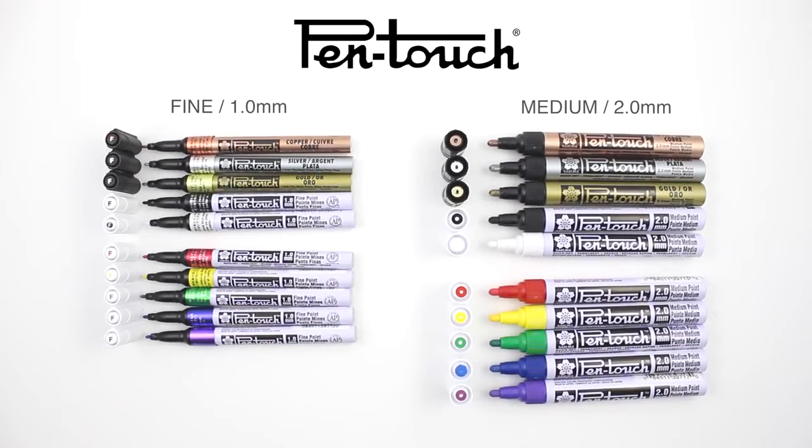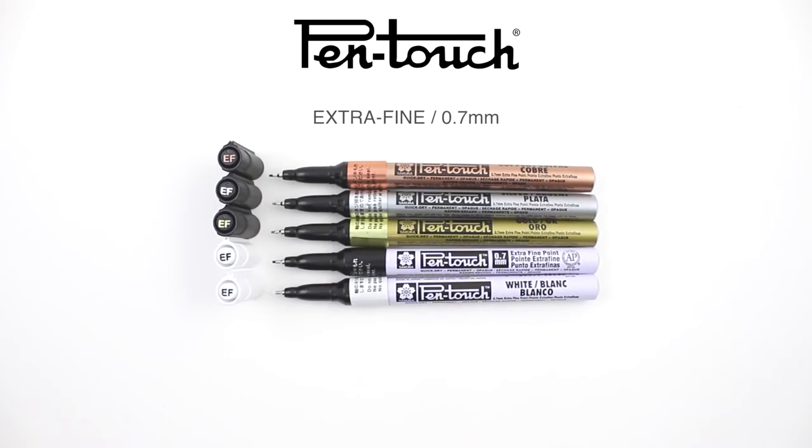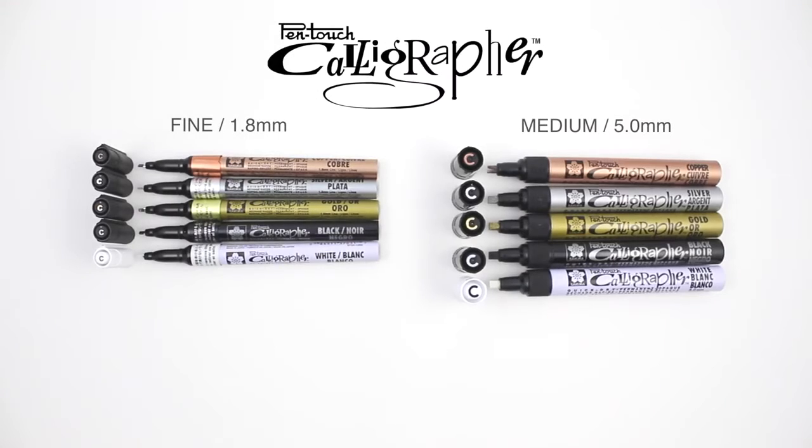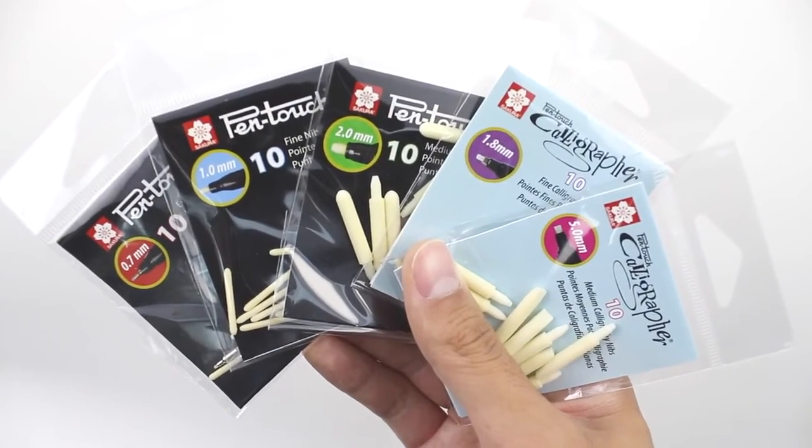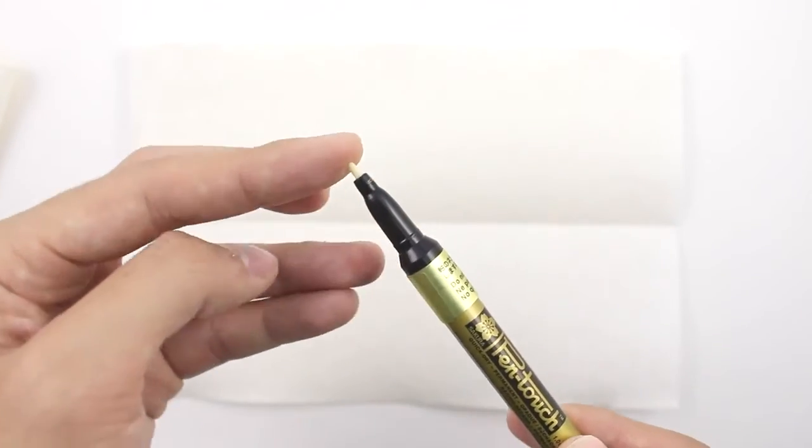The bullet-tip comes in three point sizes and ten colors, while the extra fine comes in five colors. The chisel calligrapher version comes in two line widths and five colors. Replacement nibs are available for all Pentouch markers to maximize the longevity of the ink.